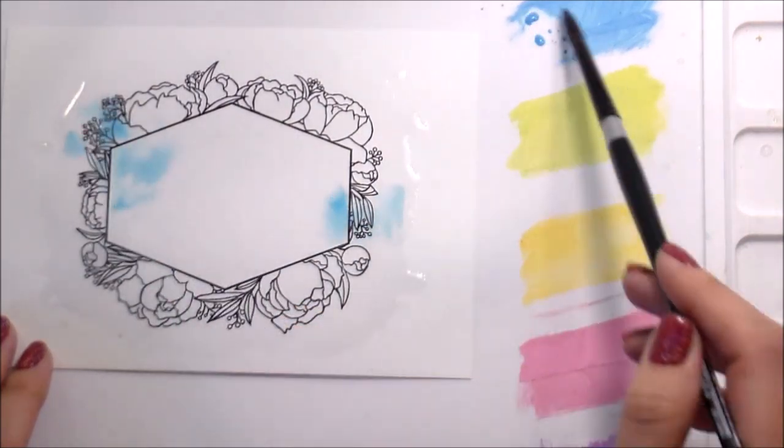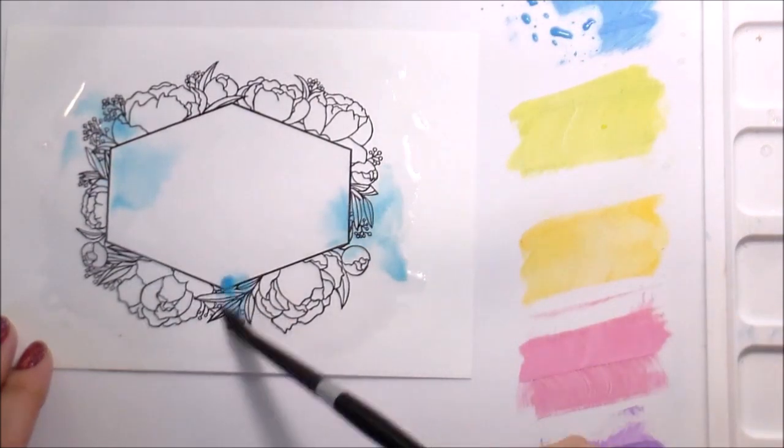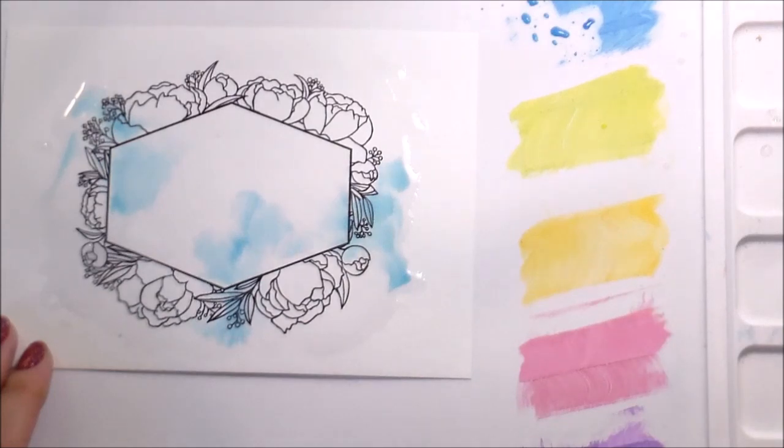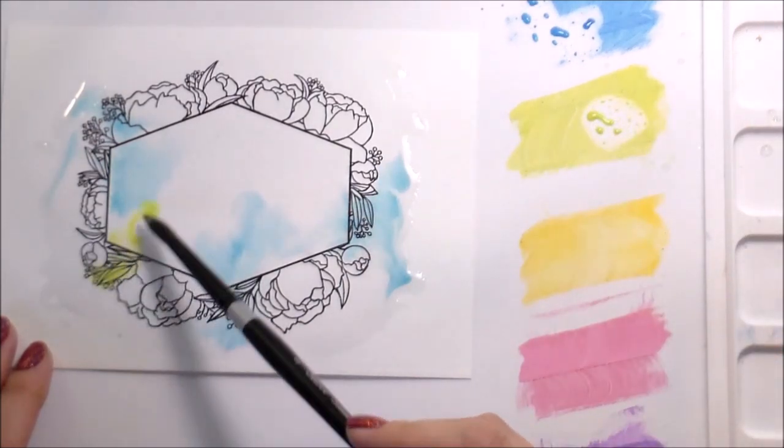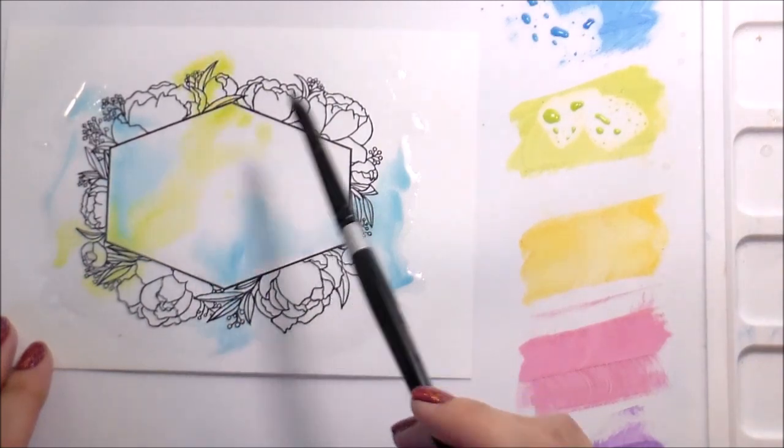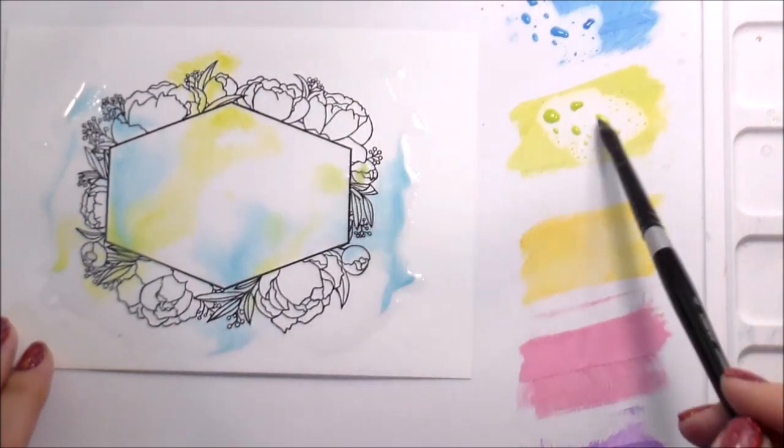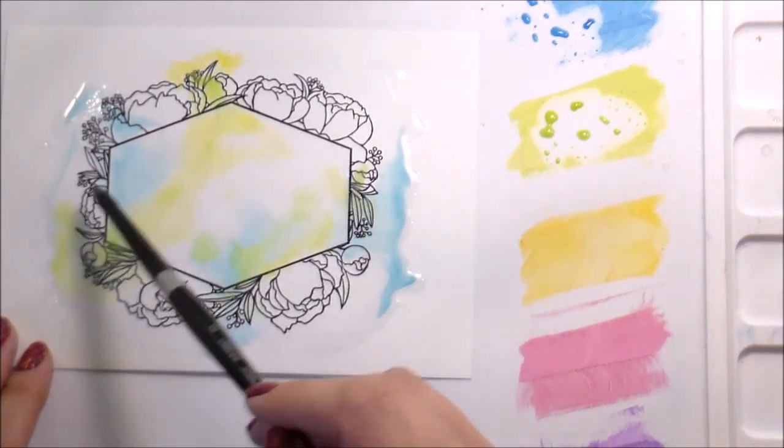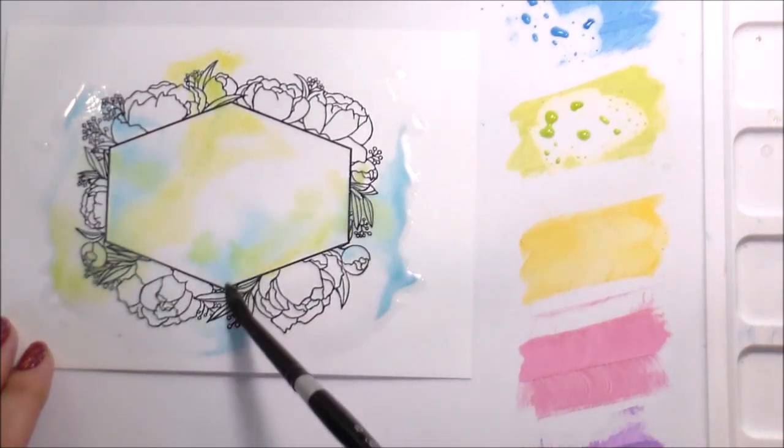Pretty much wherever I want. My game plan usually is to try to get three areas of color of the same color that are all not right next to each other. And I do try to be conscientious about what colors I'm putting next to each other. Like I know if I put a yellow and a blue next to each other I'm going to get a green. Or if I put a pink and a blue next to each other I'm going to get a purple.